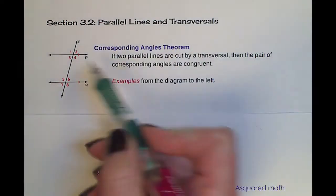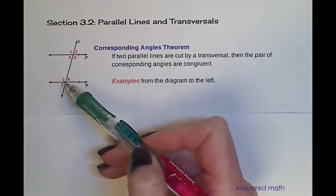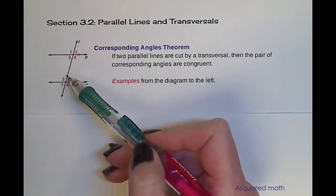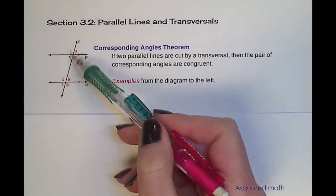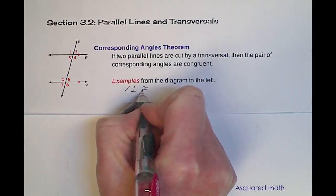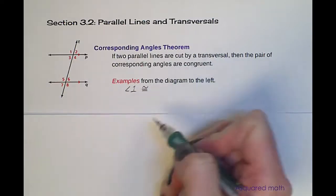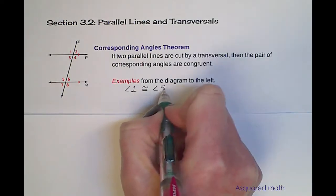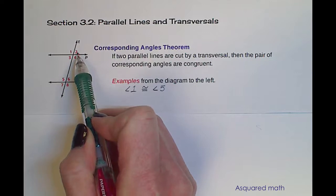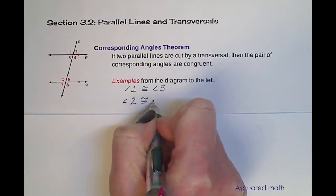Some examples from this diagram over here to the left. If we take a look at angle 1 and angle 5, both of these angles are above the parallel lines and to the left of the transversal. So angle 1 and angle 5 are going to be congruent — the symbol for congruent is that equal sign with the little squiggly tilde above it. So angle 1 is congruent to angle 5. Moving to the right of the transversal, still looking above the lines, we have angle 2 and angle 6, so angle 2 is congruent to angle 6.